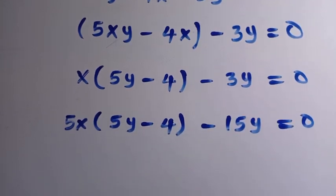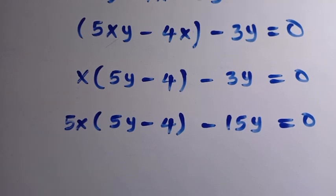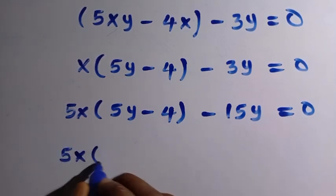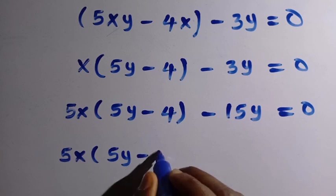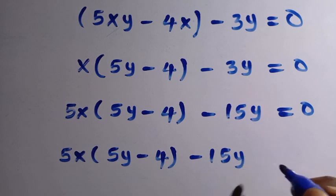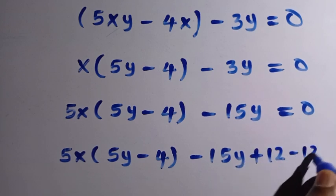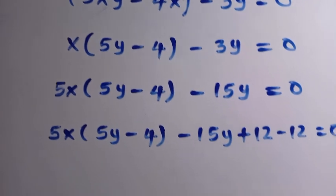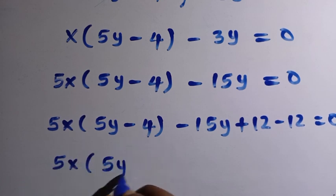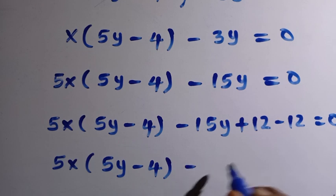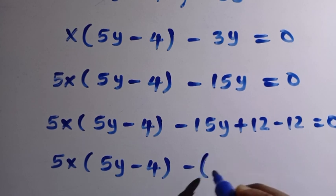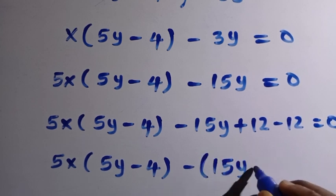Now suppose we add 12 and subtract 12 from both sides. The equation becomes 5x times (5y minus 4), minus 15y, plus 12, minus 12 equals 0. Taking out the negative we have 15y minus 12 grouped together.